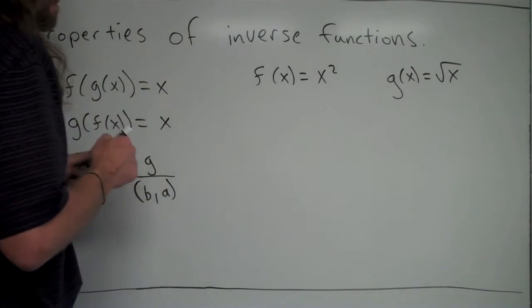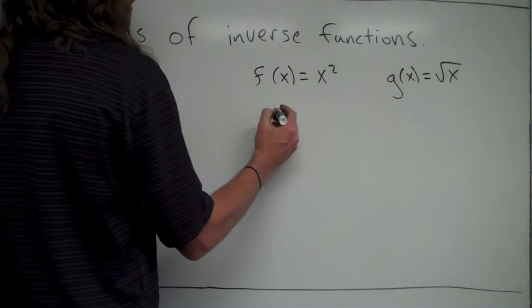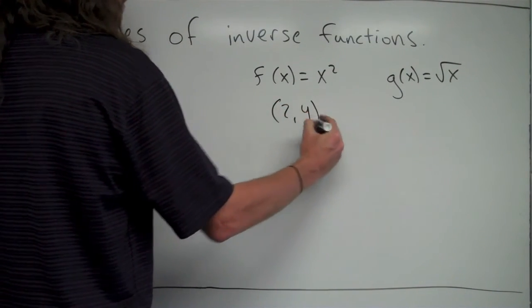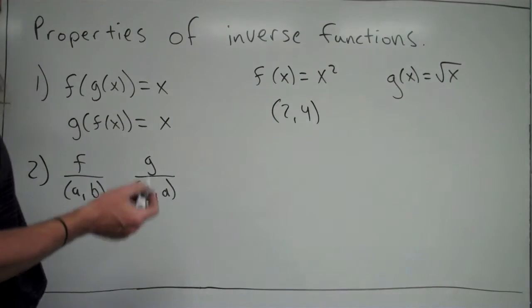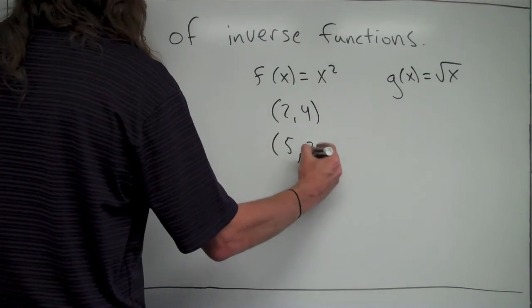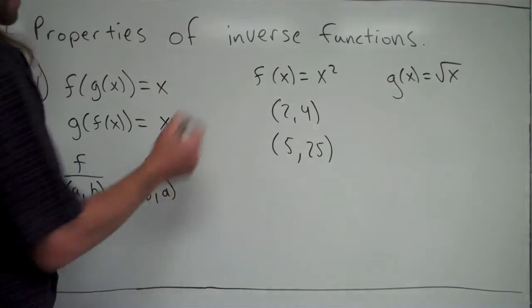So let's just look here, for example, at a few points that are on f of x. Let's say the point 2 comma 4, because if I take 2 and plug it in, it just becomes 2 squared is 4. Or the point 5 comma 25 is another point that's on f of x.